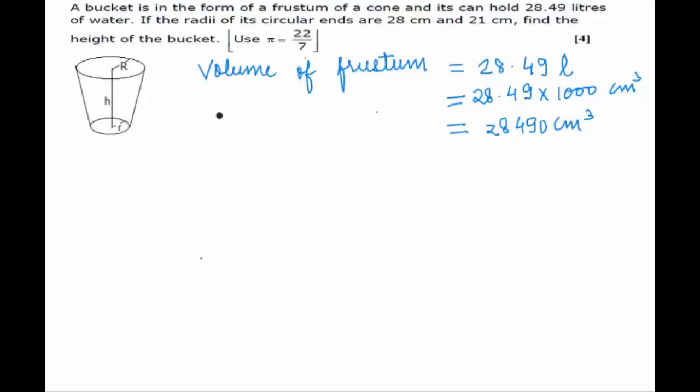We also know that the small r, which is for the smaller base circular end, is equal to 21 centimeters, and the capital R, which is for the larger base, is 28 centimeters. The volume of the frustum is equal to πh/3 bracket R² plus Rr plus r².